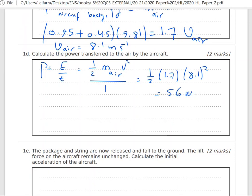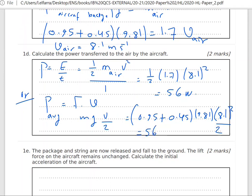Alternative method: I can use average power which equals force times velocity. The force is mass times free fall acceleration times average velocity. Mass for the aircraft 0.95 plus mass of the package 0.45 times 9.81 times velocity 8.1 divided by 2, and we get the same answer, 56 watts.